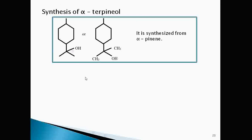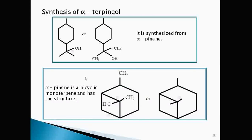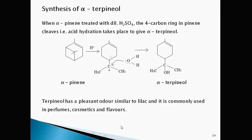Alpha terpineol. It is synthesized from alpha pinene. Alpha pinene is a bicyclic monoterpene. It has two rings. One is six-membered ring, another one is four-membered ring. When this alpha pinene is treated with dilute sulfuric acid, the four-carbon ring in pinene cleaves. Then acid hydration takes place. This four-membered ring is cleaved. Then carbocation is formed.